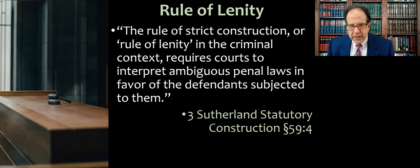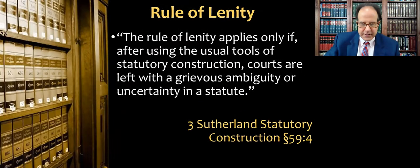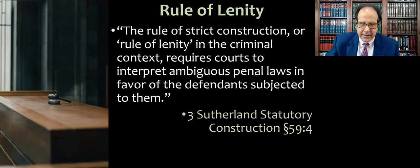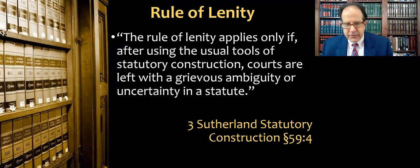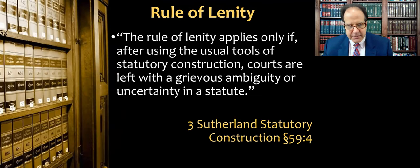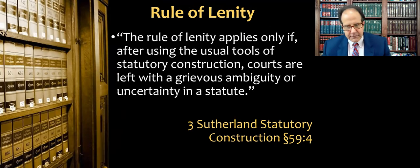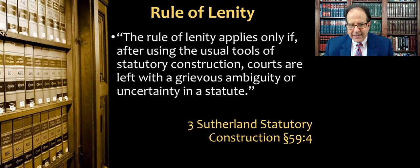The rule of strict construction, or rule of lenity in the criminal context, requires courts to interpret ambiguous penal laws in favor of the defendants subjected to them. The rule of lenity applies only if, after using the usual tools of statutory construction, courts are left with a grievous ambiguity or uncertainty in a statute. If the statute is clear, there's no rule of lenity to come into play. The rule is about ambiguous criminal statutes, or where a statute is silent on some point that has come up in a criminal prosecution.